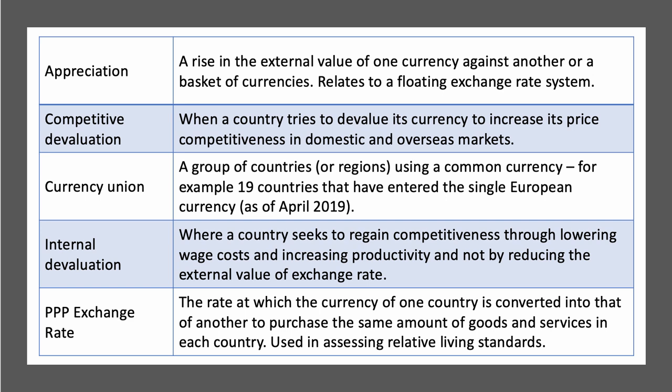Our final concept of the five today is the PPP, or purchasing power parity exchange rate. This is the exchange rate — the currency level — at which the currency of one country is converted into that of another so that we can buy the same amount of goods and services in both countries. For example, $100 could be converted at PPP to see what you can buy, and hopefully you can buy more or less the same quantity of goods and services. We tend to use the PPP exchange rate when measuring GNI per capita and assessing relative living standards between nations.